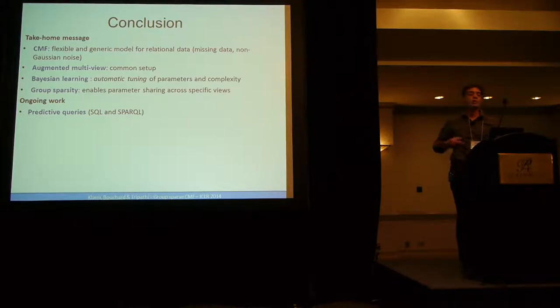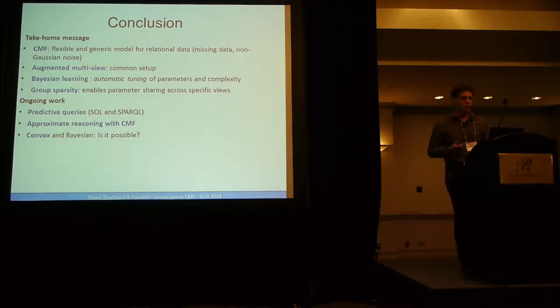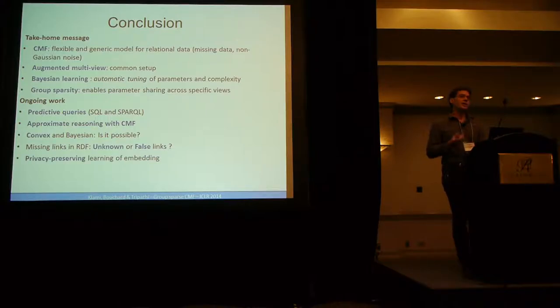And the ongoing work is on putting predictive queries, so redefining SQL or Spark Query to query not only the data but also the model. Approximate reasoning similar to what was mentioned by Bayo. Convex and Bayesian, working on the convex formulation of variational Bayes. It's by using the upper bound and the lower bound of the evidence. Missing links in RDF. There is still an open question whether you should treat missing information as missing or as zeros.